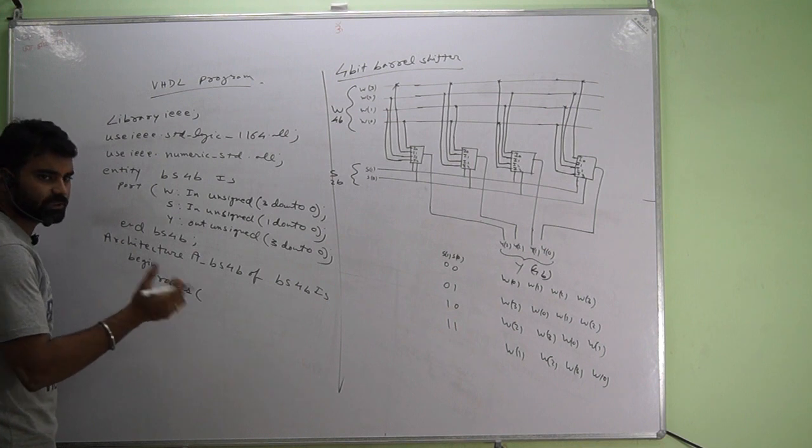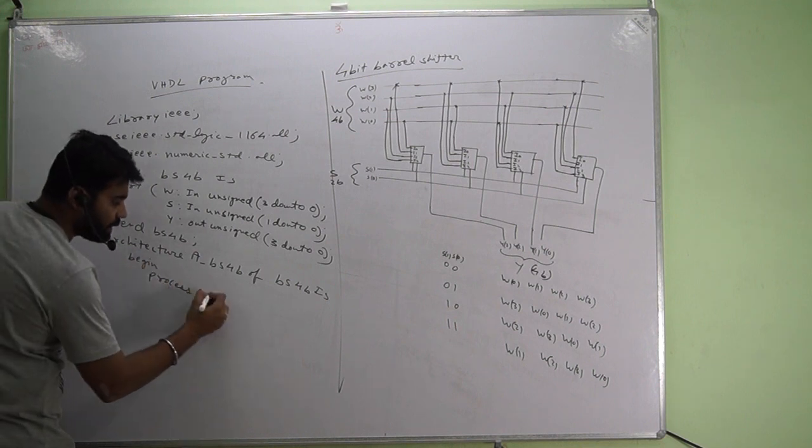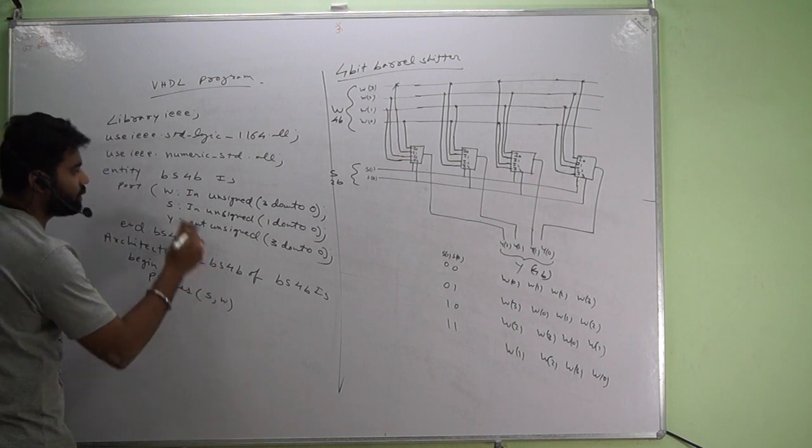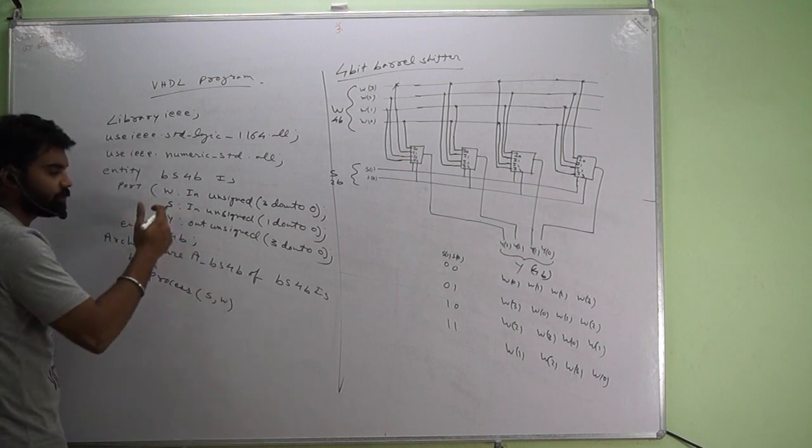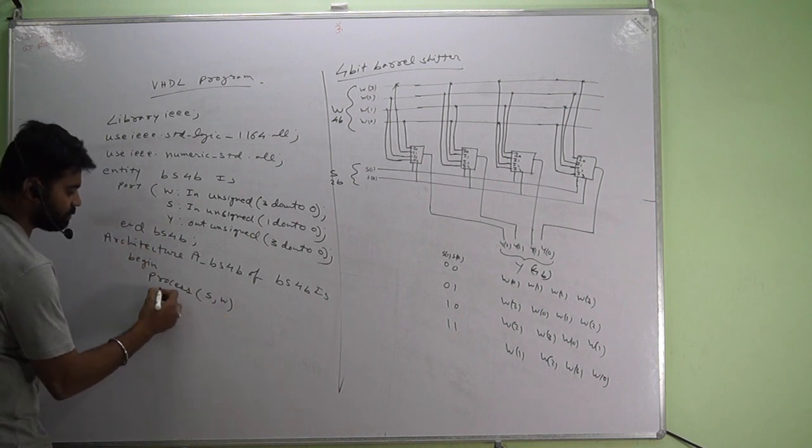Now process consists of sensitivity list. In this case the sensitivity list will be s and w, because if s changes the output will change, if w changes output will change. That is the meaning of sensitivity list. Then again begin.